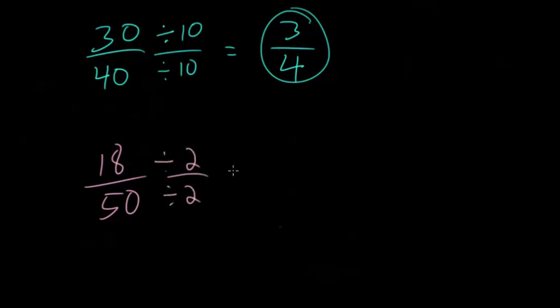In effect, we're just dividing by 1 here. 18 divided by 2 would be 9. 50 divided by 2 would be 25. At this point, we can stop, since this is fully simplified.